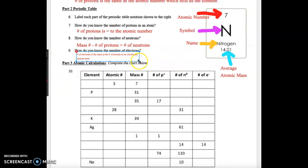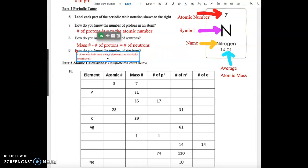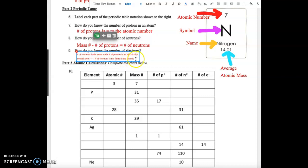When we have an electrically neutral atom, our protons are going to equal the electrons. The number of electrons is the same as the atomic number, which makes sense because the number of protons equals the atomic number, and in a neutral atom the number of electrons equals the number of protons — so the atomic number is the same as the number of electrons.